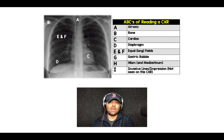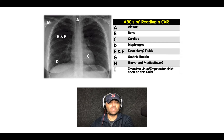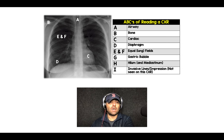E and F are kind of combined — it's equal lung fields. I kind of cheated there, but equal fields is the easy way to do that. Basically you want to make sure that one lung doesn't look too much bigger than the other. Although the right side has three lobes and the left side has two lobes, typically you want to make sure they're about the same size.